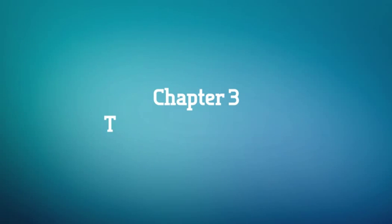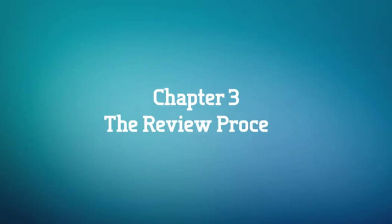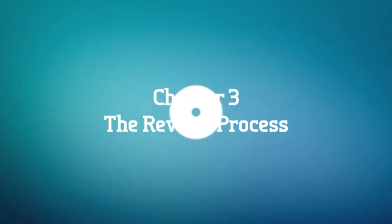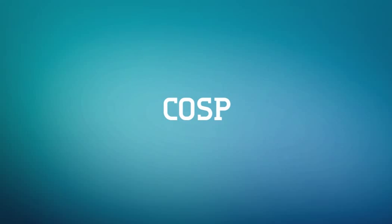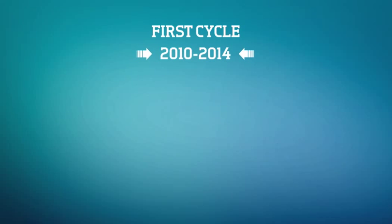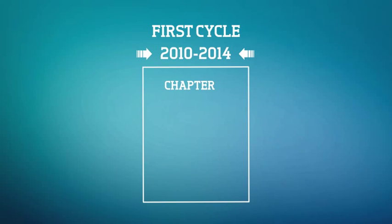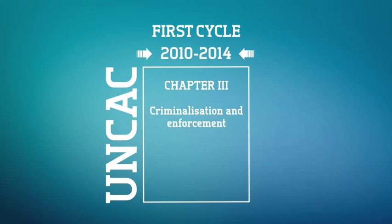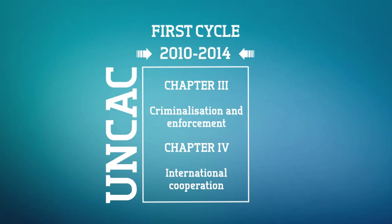Chapter 3: The Review Process. In 2009, the COSP decided to review the convention in two five-year cycles. In the first cycle, from 2010 to 2014, the review process will cover Chapter 3 of the UNCAC on Criminalization and Enforcement, and Chapter 4 on International Cooperation.